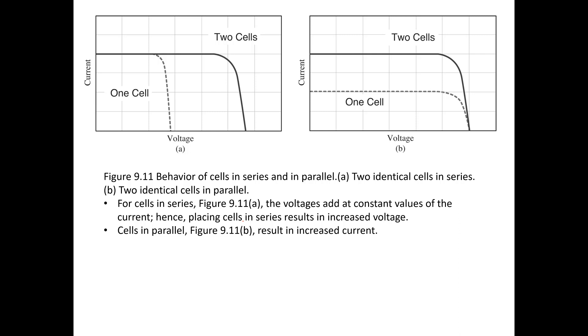For the cells in series, voltages add at constant values of the current. So again, you have a cell here and then another cell added with a total voltage increase at constant current. But for the cells in parallel, you have the current increasing at constant voltage.